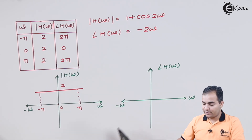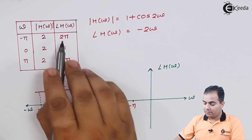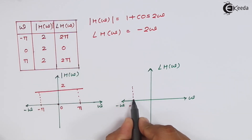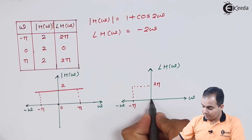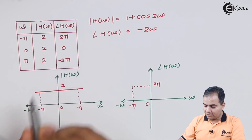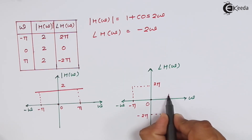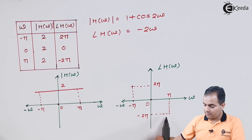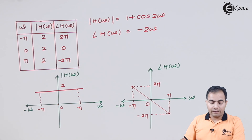Now we move on to the phase response. At ω = −π the value is +2π, at the origin ω = 0 the value is 0, and at ω = π the value is −2π. Connecting all three points gives a straight line through the origin. This is the phase response, and the previous graph is the magnitude response.